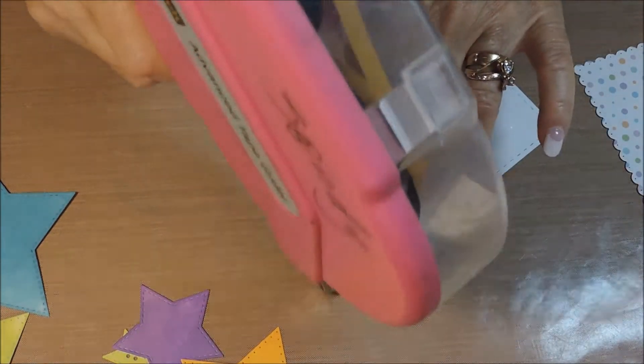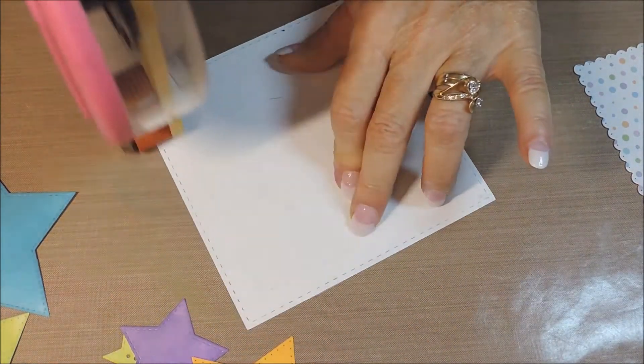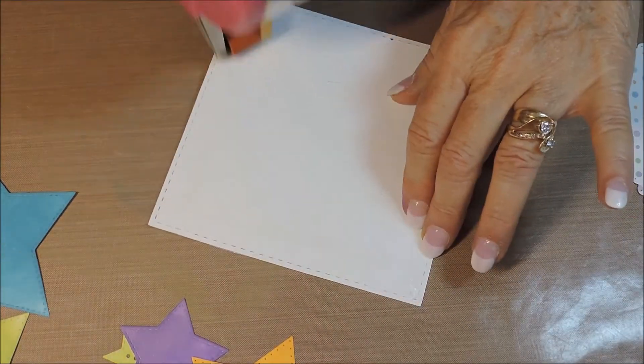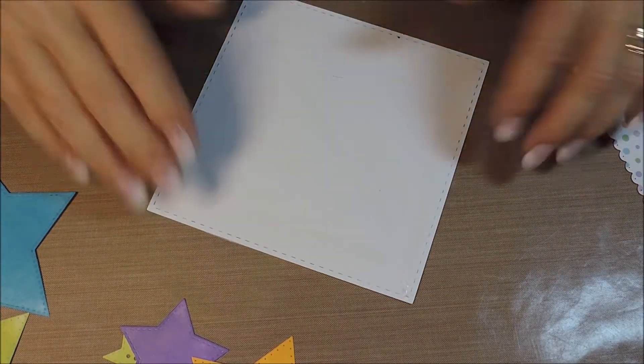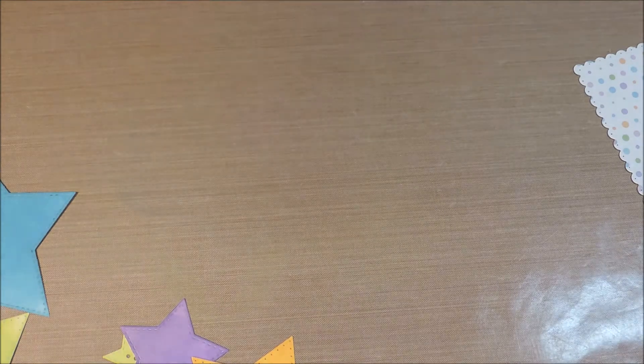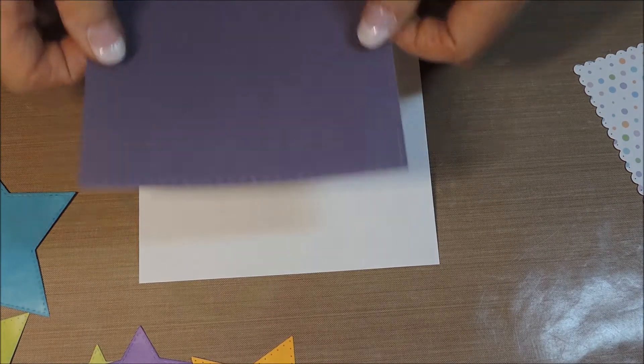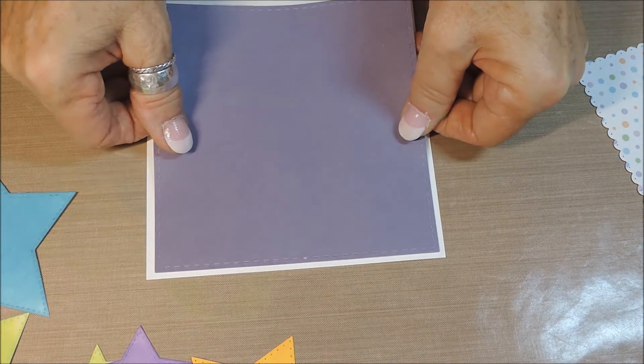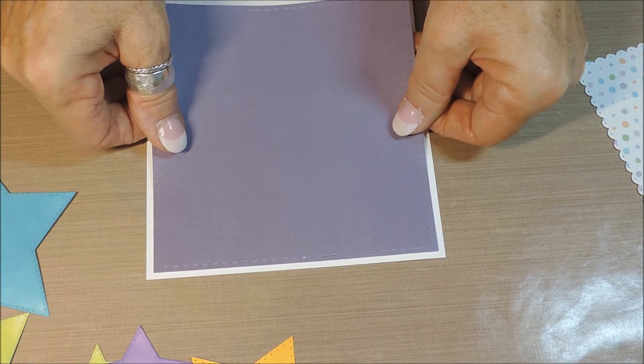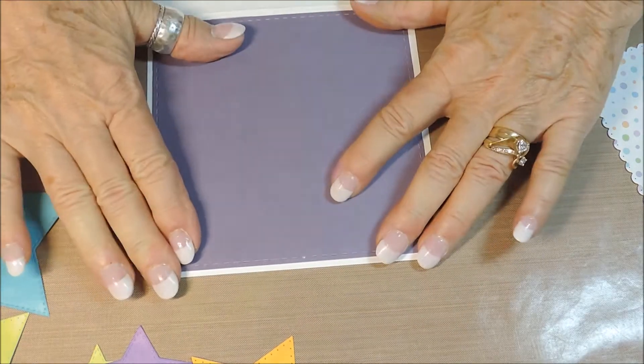Now let's put our card together. Begin by adding adhesive to the back of your square panel. The back of this panel is white but it is purple on the right side. Lay the card base out flat on your work surface before adding your panels. This way it makes it easier to line up and you don't have that bump and fold to deal with.